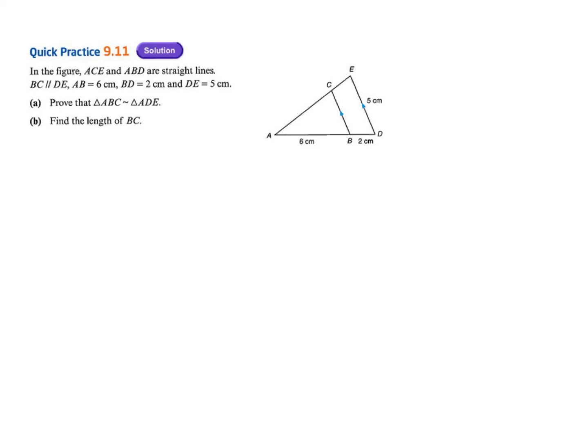Part A is to prove triangle ABC is similar to triangle ADE. Let's look at this picture. For proof of similarity, we can use one of the reasons. The first one is AA — angle-angle.